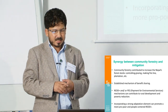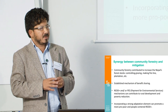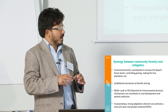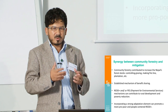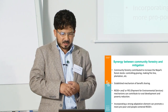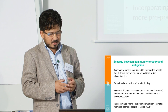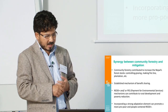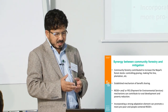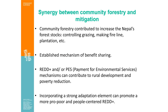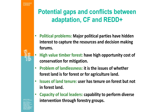Regarding synergy between community forestry and mitigation, particularly the REDD mechanism: community forestry has contributed to increasing Nepal's forest stock by controlling grazing, making fire lines, plantation, and establishing benefit-sharing mechanisms. REDD and payment for ecosystem services mechanisms can contribute to rural development and poverty reduction. Incorporating a strong adaptation element can promote a more pro-poor and people-centred REDD. Potential gaps and conflicts between adaptation, community forestry, and REDD include political problems, as major political parties have hidden interests in capturing resources and decision-making forums when funds arrive.